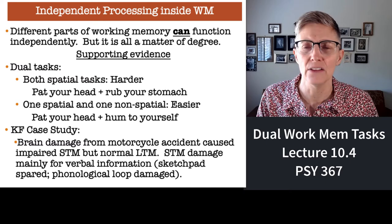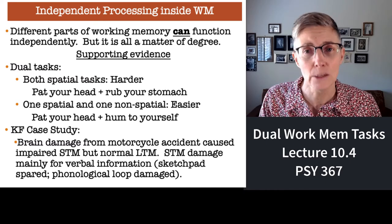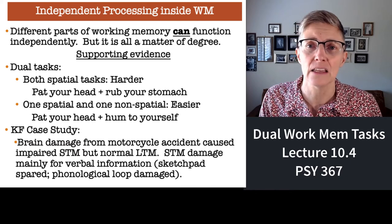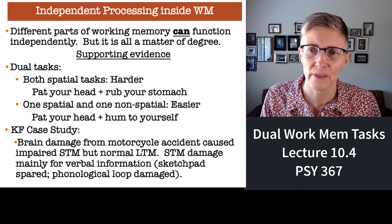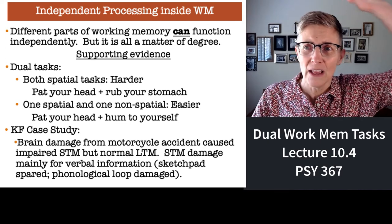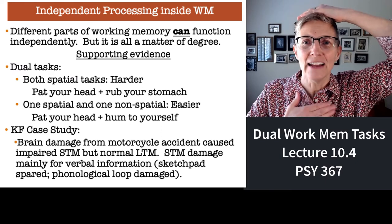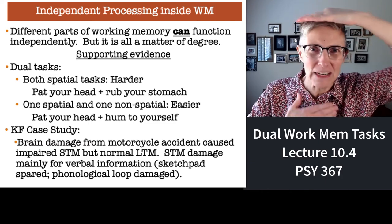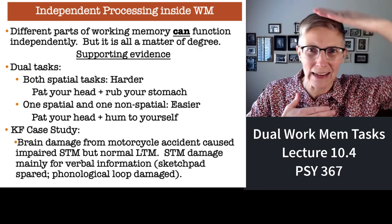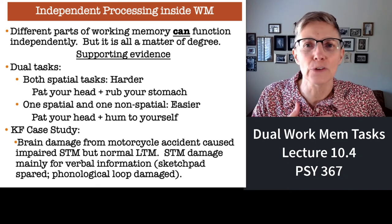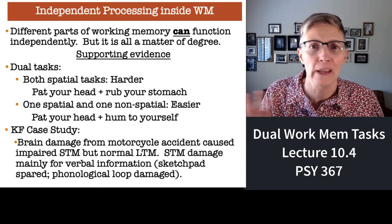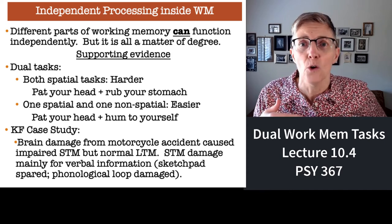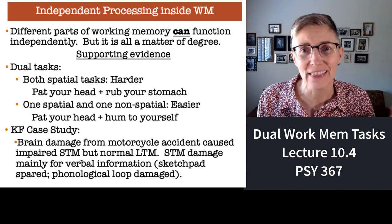It turns out that different parts of working memory can function independently of one another. It appears that the visual-spatial sketchpad can function independently of the phonological loop. For example, if I tap my chest and try to make circles with my head, it's a struggle. But it's very easy for me to tap my chest and hum — I don't even have to pay any attention to that at all. So when I use language and a visual task, it's easy. When I have two visual-motor tasks trying to do two different things, it's harder.